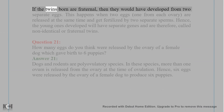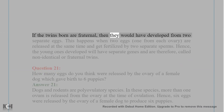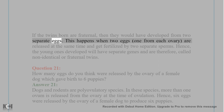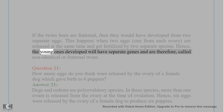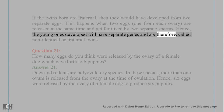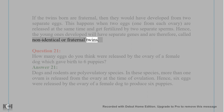If the twins born are fraternal, they would have developed from two separate eggs. This happens when two eggs, one from each ovary, are released at the same time and get fertilized by two separate sperms. Hence, the young ones will have separate genes and are therefore called non-identical or fraternal twins.